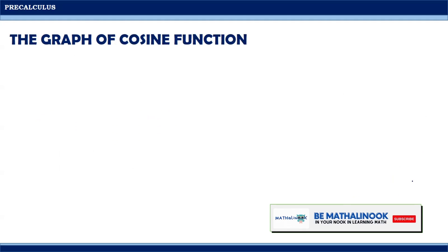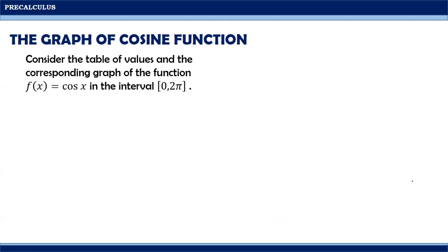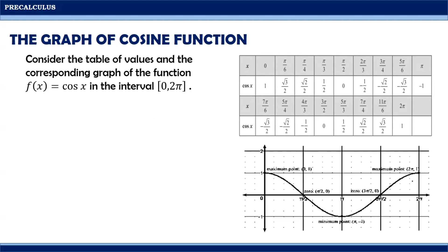This time, let us consider the graph of the cosine function. Consider the table of values and the corresponding graph of f(x) = cosine x in the interval 0 to 2π. This is the table of values where x are the measurements of angles and cosine x is the f(x). Plotting these points on a Cartesian plane, we will have this graph. Notice that the period of f(x) = cosine x is also 2π, meaning beyond this point the graph or pattern will simply repeat itself.